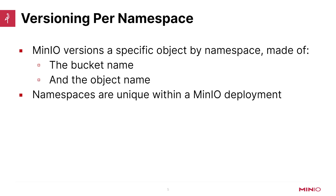What is a namespace? MinIO versions objects by namespace, and the namespace itself is comprised of the bucket name, any prefixes, and the object name. A namespace is unique within a MinIO deployment, so that allows us to version all of our objects because we know there is only one object with that particular namespace.